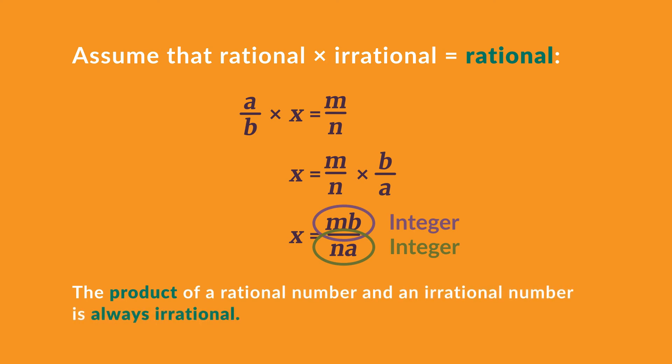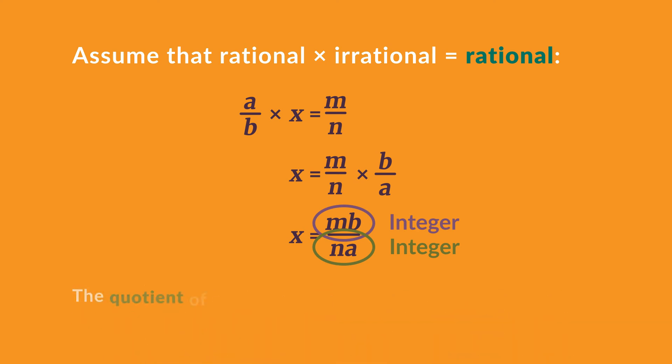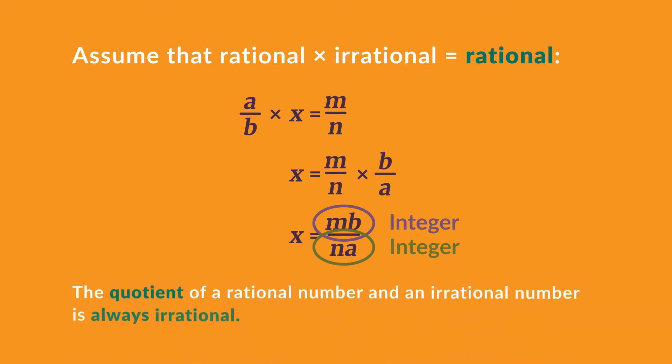And we've used a proof by contradiction to show this result. Note that we could work in exactly the same way to prove that the quotient of a rational number and an irrational number is also always irrational.